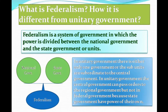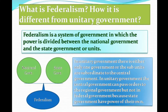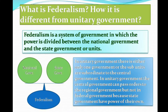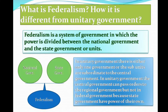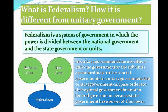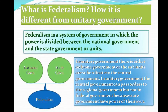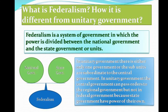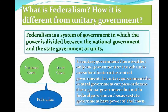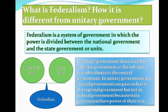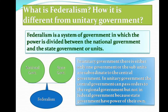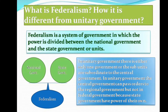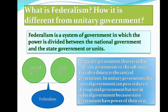In a unitary government, there is either only one government or the subunits are subordinate to the central government. In a unitary government, the central government can pass orders to the regional government, but not so in a federal government.